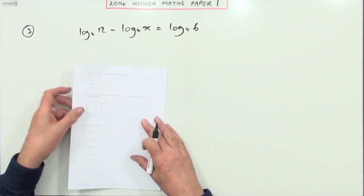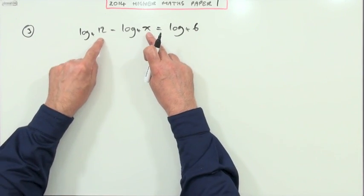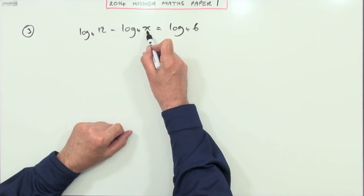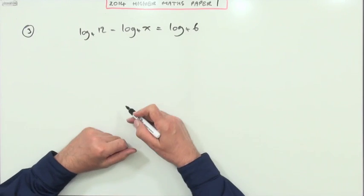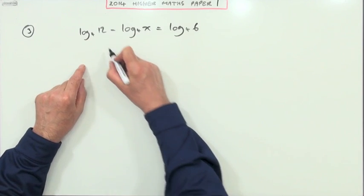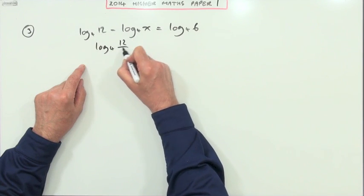Number 3: this little log equation. What's the value of x? Well, if you're subtracting logs, you're dividing the numbers you're operating on. So what would you divide by to get an answer of 6? It must be 2. Otherwise you have to set it out the long way. You'd have to say, well, that's the same as log of 12 upon x equals log of 6.